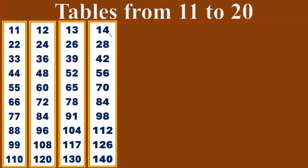Fourteen times table. Fourteen ones are fourteen. Fourteen twos are twenty-eight. Fourteen threes are forty-two. Fourteen fours are fifty-six. Fourteen fives are seventy. Fourteen sixes are eighty-four. Fourteen sevens are ninety-eight. Fourteen eights are one hundred and twelve. Fourteen nines are one hundred and twenty-six. Fourteen tens are one hundred and forty.